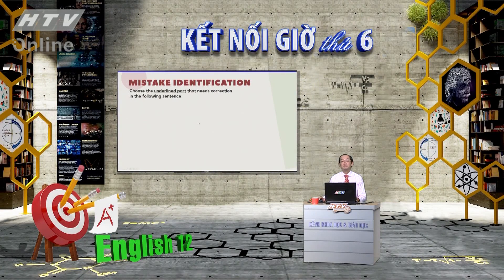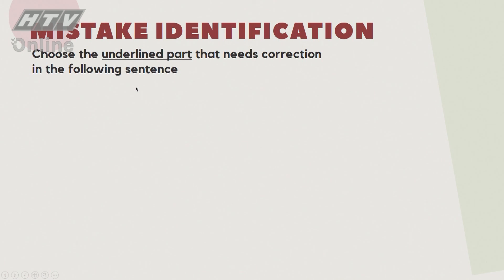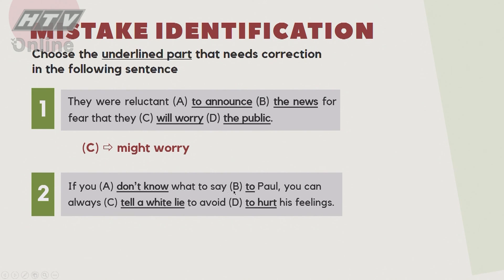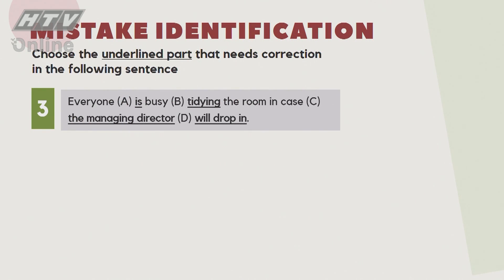Dạng bài tiếp theo là Mistake Identification. Câu số 1: 'They were reluctant to announce the news for fear that they will worry the public.' Đáp án sai nằm ở 'will worry' - phải dùng 'might worry'. Câu số 2: 'To avoid to hurt his feelings' - sai, phải là 'to avoid hurting his feelings' - after 'avoid' dùng verb-ing. Câu số 3: 'In case the managing director will drop in' - 'in case' không đi với 'will', phải là 'drops in'.